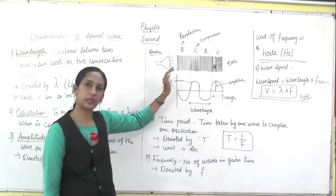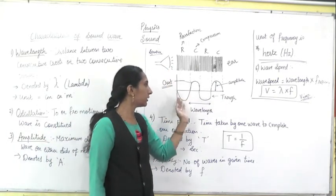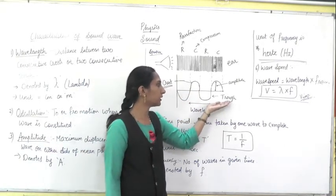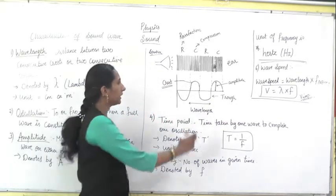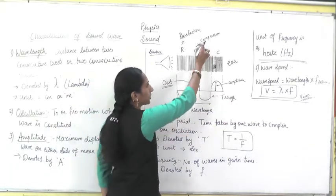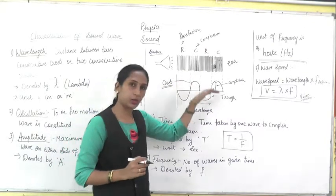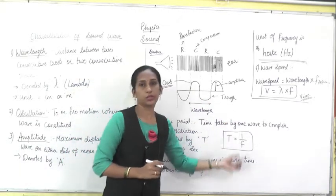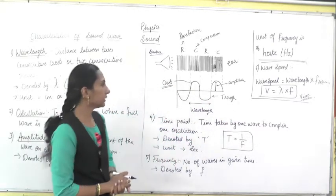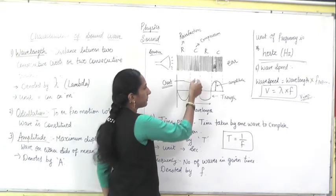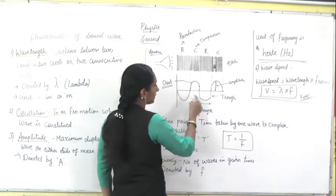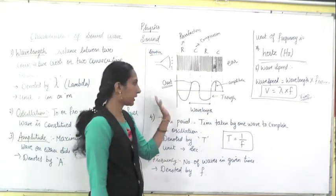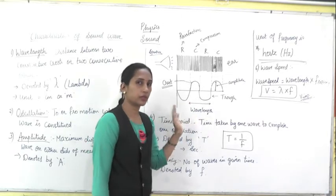So rarefaction means low density, which is denoted by the wave below the axis, and the name for it is trough. Crest means compression — the high density part shown above the axis. So crest is the high density part and trough is the rarefaction or low density part. These are the first two names — crest and trough.